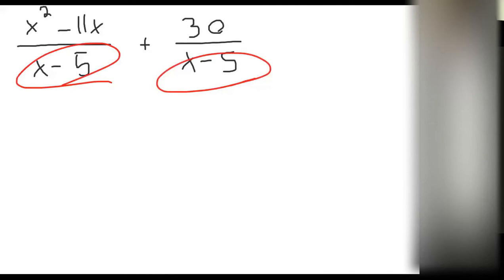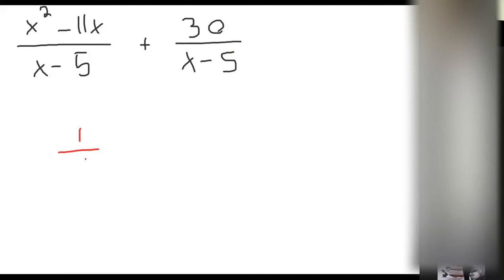So if we were talking about something like this, like 1 over 7 plus 2 over 7, well, you're ready to put those two together. 1 over 7 plus 2 over 7, that's 3 over 7.